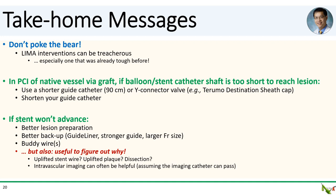Take-home messages. First, don't poke the bear — in this case there was very little choice, but be wary of repeat PCI if you know there was trouble in a prior attempt. LIMA interventions can be especially treacherous. We also discussed what to do if your balloon or stent catheter shaft is too short: use a short guide catheter (90 cm), a short wide connector valve, or shorten your guide catheter. And if your stent won't advance, you have the standard algorithm: better lesion preparation, better backup, buddy wires. But one lesson learned here is that it might be helpful to figure out exactly why the stent won't advance — intravascular imaging could have been useful to see if there was an uplifted stent strut, an uplifted plaque, or a dissection flap. Thank you for watching.